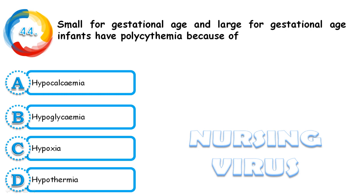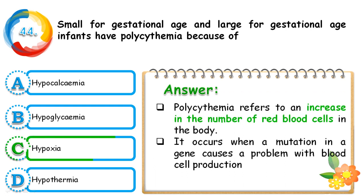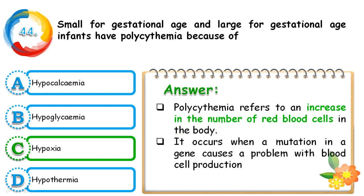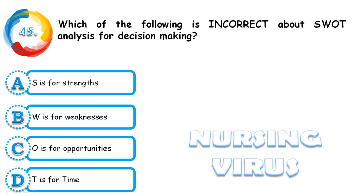Question 44: Small for gestational age and large for gestational age infants experience polycythemia because of hypocalcemia, hypoglycemia, hypoxia, or hypothermia. The correct answer is hypoxia. Polycythemia refers to an increase in the number of red blood cells in the body. It occurs when mutation in genes causes a problem with blood cell production, and when the person has low blood circulation with reduced oxygen-carrying blood.